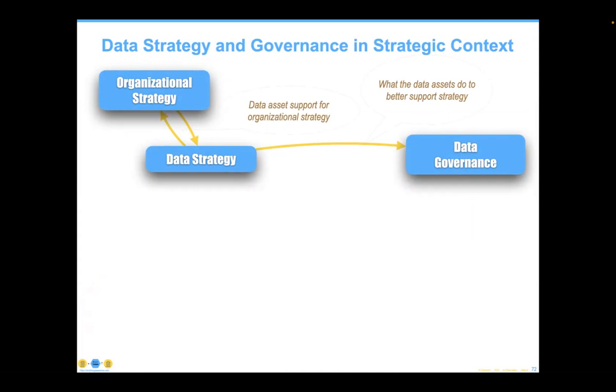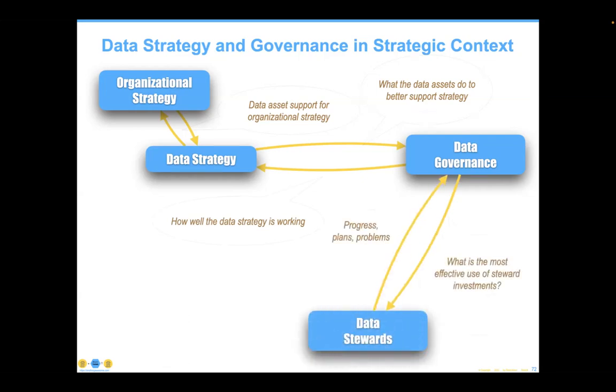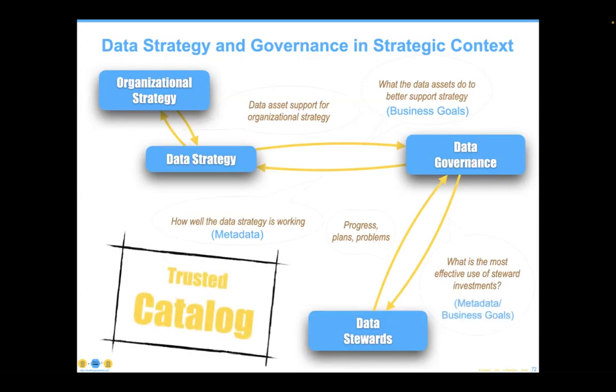When we look again, it's the idea: what data support can we provide that will help the organization better achieve its strategy? Then we take that data strategy and push it into data governance and say: what can data assets do to help better support the strategy? That's important because data governance — you're generally completely ungoverned when you start. So the question is, where do you start? Use this type of approach to say: how well is this stuff working? Are we able to focus in on the things that we're trying to do? The stewards have to be taught these business goals and the metadata as the language — the controlled vocabulary — that you use in order to do this. This only works if you have a trusted catalog in the process.